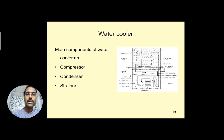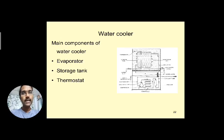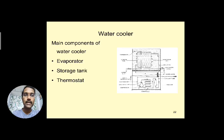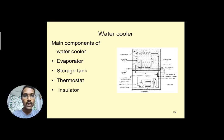The main components of the water cooler are: compressor, condenser, strainer, expansion device (capillary tube), evaporator storage tank, and thermostat. The thermostat is a temperature control sensor — you can adjust it to maintain the required temperature, such as 10 or 15 degrees centigrade. Insulation such as glass wool or thermocol is provided around the tank to prevent heat exchange from the surroundings.